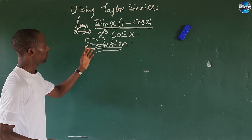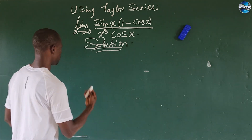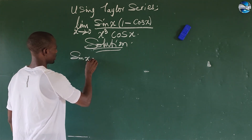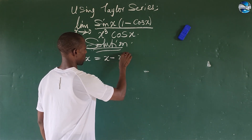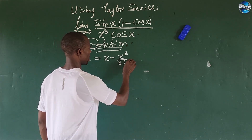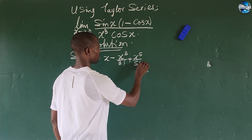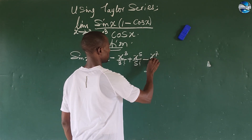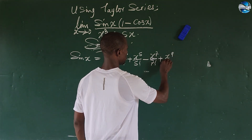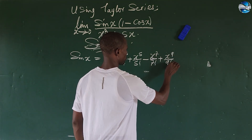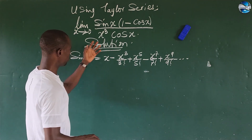From here we'll be asked to use the Taylor series result. First of all we look for sine(x). We all know that sine(x) is equal to x minus x to the power of three all over three factorial, plus x to the power of five all over five factorial, minus x to the power of seven all over seven factorial, plus x to the power of nine all over nine factorial, and so on.